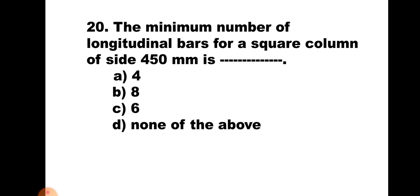Question number 20. The minimum number of longitudinal bars of a square column of side 450 mm is: A) 4, B) 8, C) 6, or D) none of the above. If you provide only two bars for a side of 450 mm, the distance between two bars will exceed 300 mm. So minimum three bars must be provided on one side — four bars in the four corners and four bars in the middle — giving a total of eight bars. Hence the correct answer is B, 8.